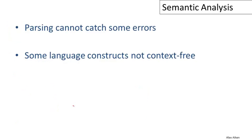Now you might ask yourself, why do we even need a separate semantic analysis phase? And the answer to that is very simple. There are some features of programming languages, some kinds of mistakes you can make that parsing simply can't catch. Parsing, using context-free grammars, is not expressive enough to describe everything that we're interested in in a language definition. Some of these language constructs are not context-free.